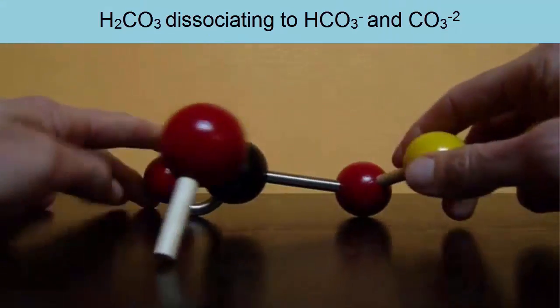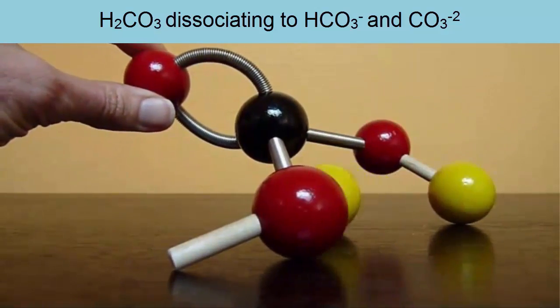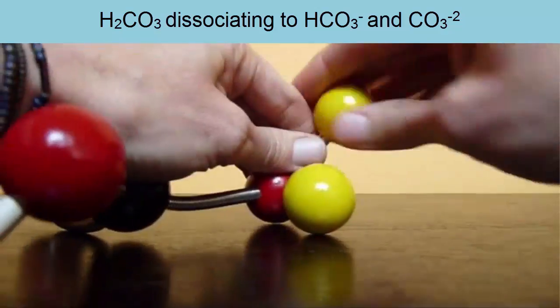Here you see carbonic acid releasing a hydrogen ion. It can release one or two in order to buffer the pH of the surroundings and ensure that it maintains the same pH.